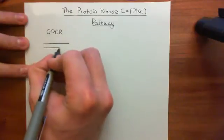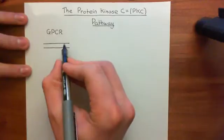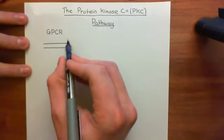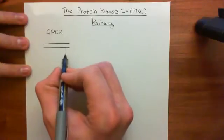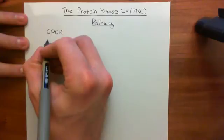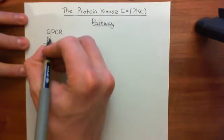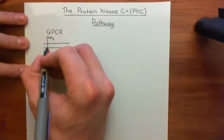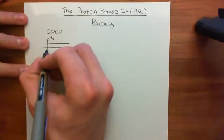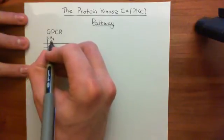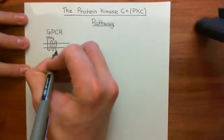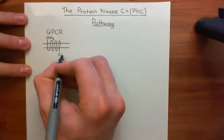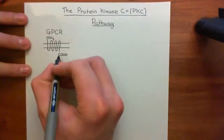Let's remind ourselves what a GPCR looks like. If this represents the phospholipid bilayer of the cell membrane, we've got two layers of phospholipids: the outer leaflet, which faces the extracellular fluid, and the inner leaflet, which faces the cytoplasm. All G-protein coupled receptors have a characteristic structure - they all have their amino termini extracellularly, and then the polymer of amino acids spans the membrane seven times in membrane-spanning alpha helices, ending with the carboxylic acid tail on the cytoplasmic side.